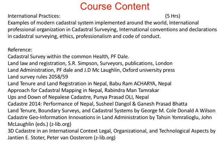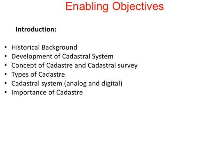The references used to prepare this course are noted in the slides. The enabling objectives for this chapter include: historical background, development of cadastral survey, concept of cadastral survey, types of cadastral survey, different forms such as analog and digital cadastral survey, and why we need cadastral survey — all covered in Chapter 1: Introduction to Cadastral Survey.